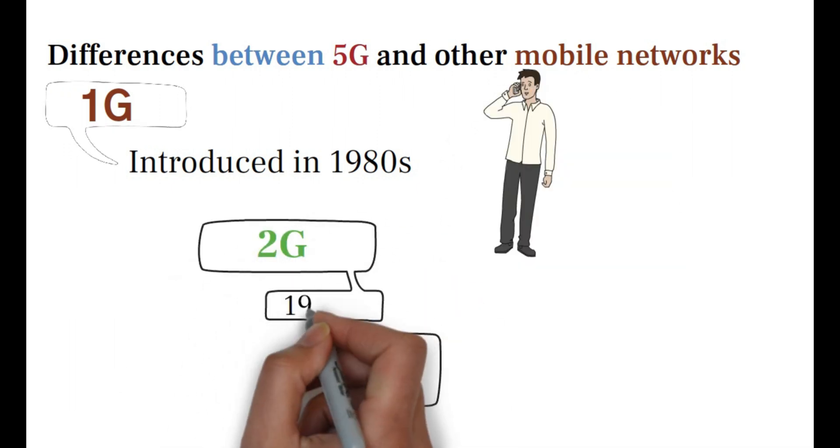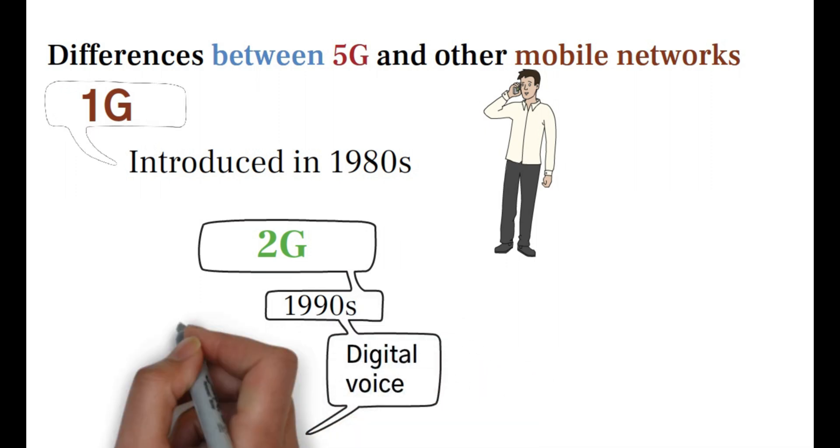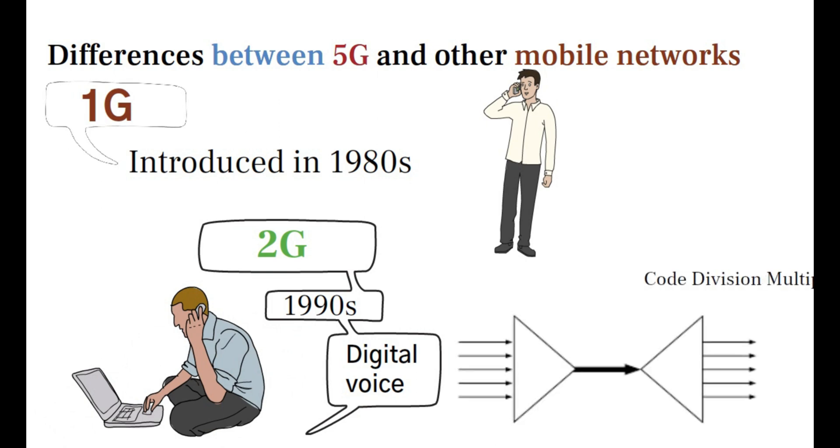2G: The second generation came in the early 1990s, delivered digital voice, for example, Code Division Multiple Access (CDMA).